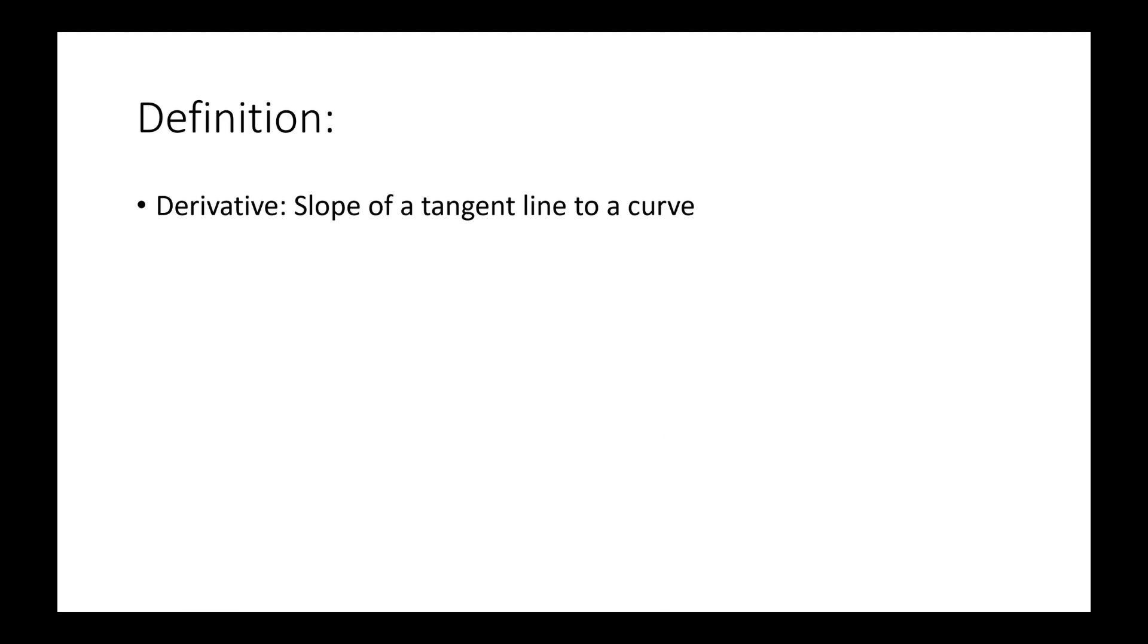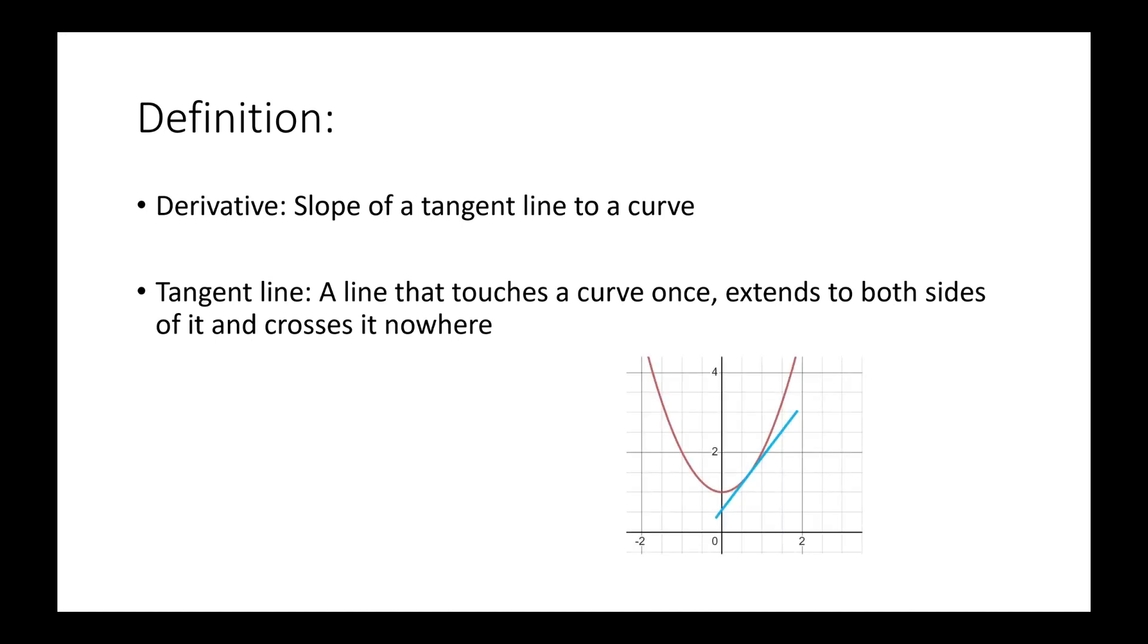The derivative is the slope of a tangent line to a curve. A tangent line is a line that touches a curve once, extends to both sides of it, and crosses it nowhere. Here is a picture of a tangent line, where the tangent line is the line shown in blue.